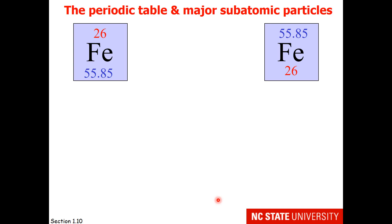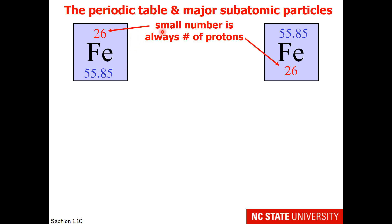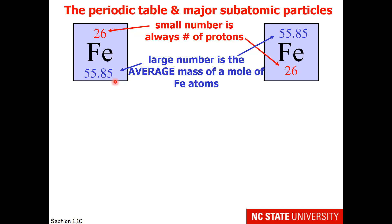When you look at the periodic table, you will see that iron has a 26 associated with it, and also a mass number of 55.85. The 26 is the number of protons. The 55.85 is the average mass of a mole of iron atoms. As you saw in the previous slide, there are some iron atoms that have a mass of 56. But since the average is 55.85, there obviously must be some iron atoms that have a mass lower than 56.